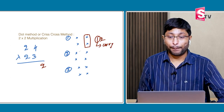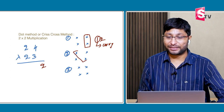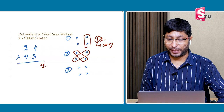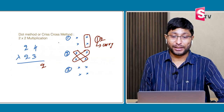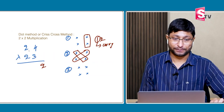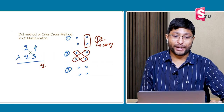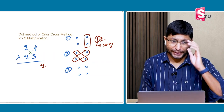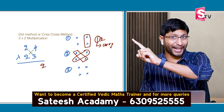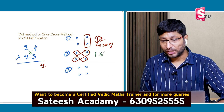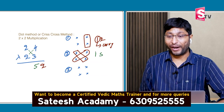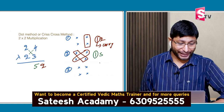Step 2: multiply units place into tens place and units place into tens place. 3 into 2 is 6, and 4 into 2 is 8. 8 plus 6 is 14, plus the 1 carry is 15. Write down the 5, and 1 will be carry.